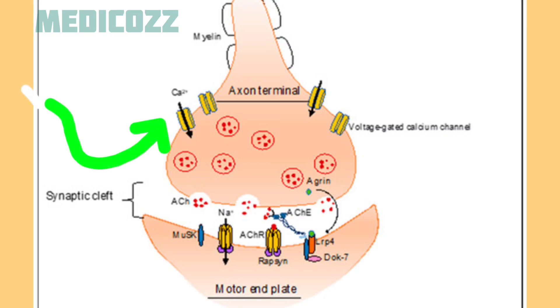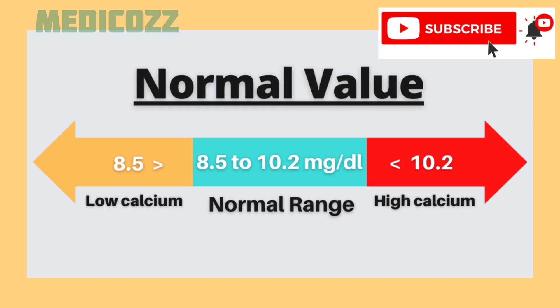The normal level of calcium in the blood is between 8.5 to 10.5 mg per deciliter. When it is less than 8.5, it is labeled as hypocalcemia.